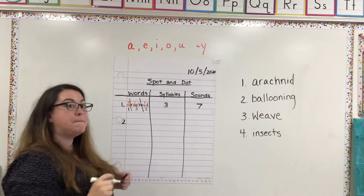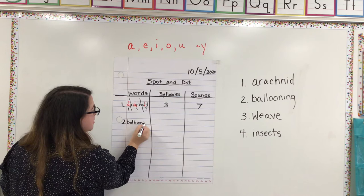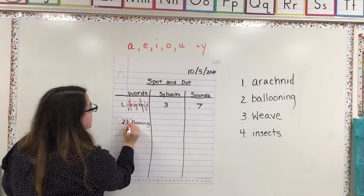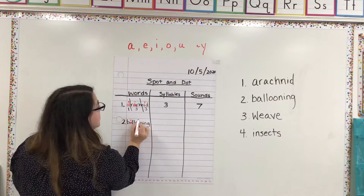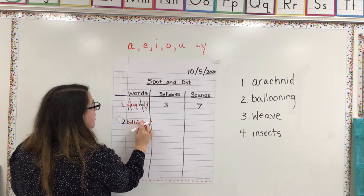I'm going to skip a line, and I'm going to write number two. And this one is ballooning. And I already see a couple exciting things about this one. This one's really tricky, which is fun. So, let's go ahead and spot and dot our vowels first. I see I've got an A here. Go ahead and do that one. And I see here I've got two O's.